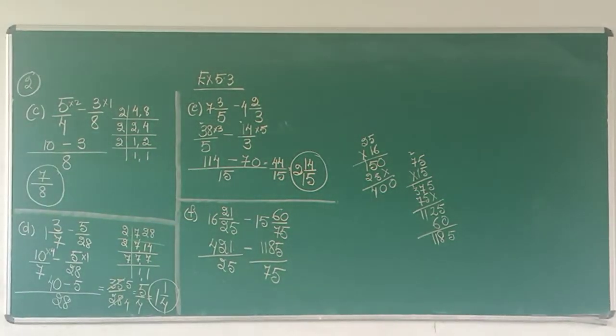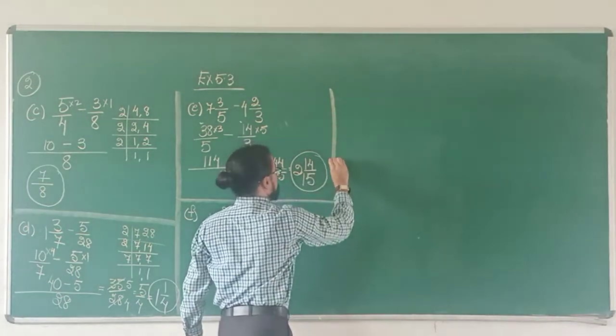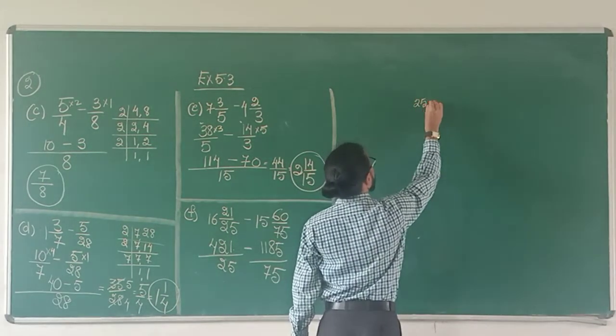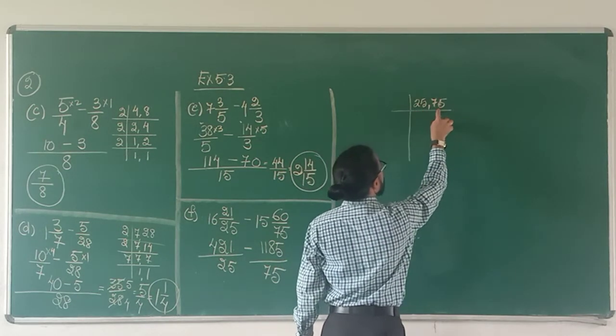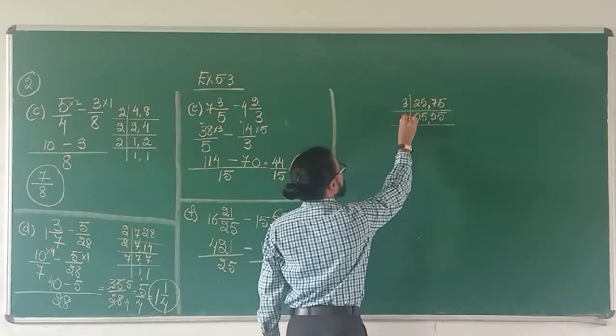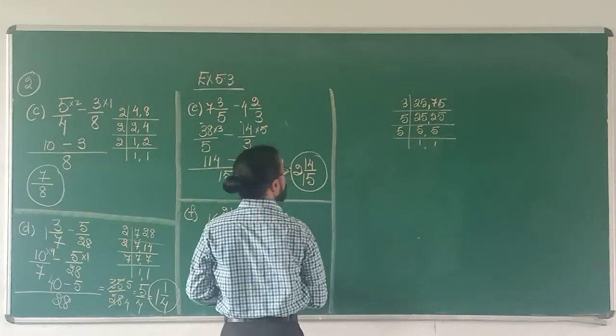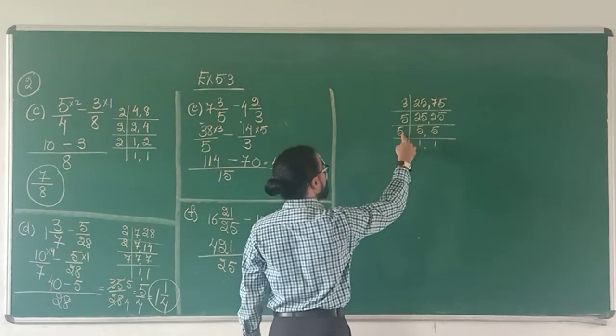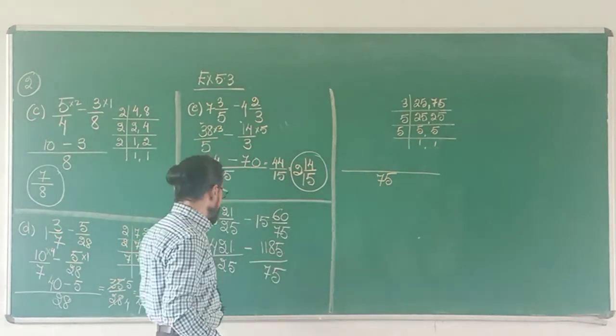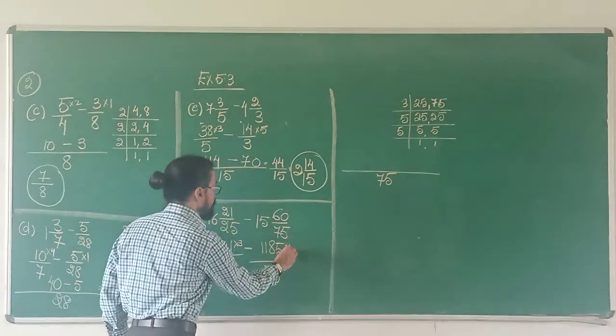So I have to find the LCM of 25 and 75. 2 does not go. 3 goes into 75. So 3, 25. 3 2's are 6, 3 5's are 15. 25 is divided only by 5. 5, 5, 25. 5, 5, 25. 5, 5, 25. And 5, 1's are 1's. 5, 5, 5. So I get my LCM is 3, 5's are 15, 15 5's are 75. 25 goes into 75 three times. So 421 has to be multiplied by 3. 75 goes into 75 only one time. So 1185 has to be multiplied by 1.